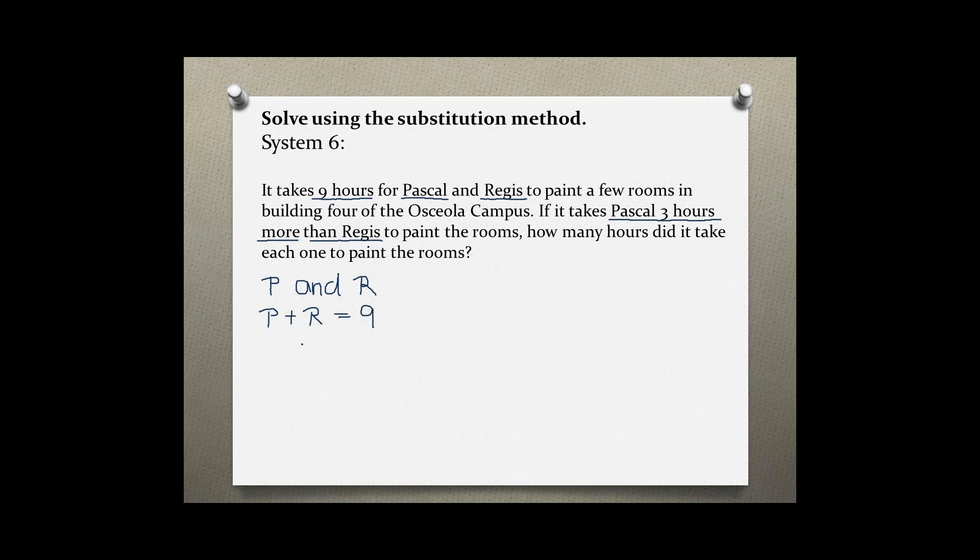So our second equation should be P equals R plus three. It took Pascal three hours more than Regis to paint the room. Now we have our system of linear equations and the second equation is already solved for P.